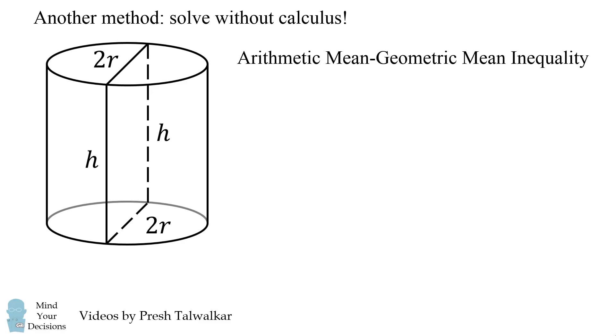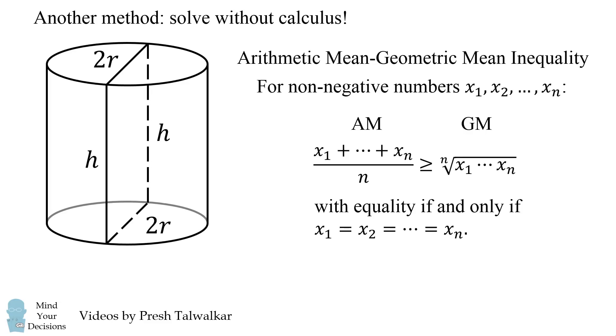It uses the arithmetic mean geometric mean inequality. I did a video on this, and you should definitely check it out to understand why this is true. I'm just going to present this inequality and use its result for the rest of this video. This states that for non-negative numbers x₁ to xₙ, the arithmetic mean is always greater than or equal to the geometric mean. Equality holds if and only if all variables are equal to each other.